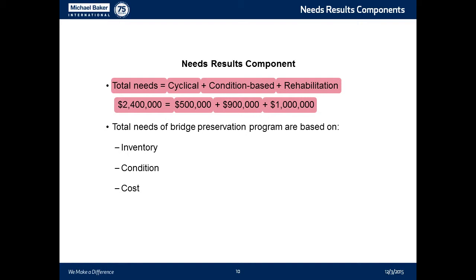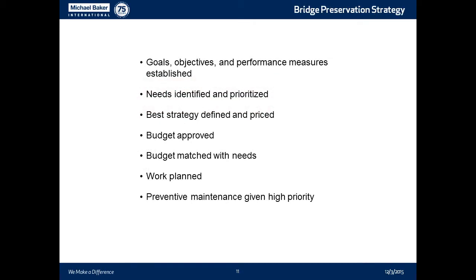In terms of strategy, Bill described the goals, objectives, and performance measures. Now is the time to work on identifying and prioritizing those needs, and that's going to be based on different risk criteria — scour is one. BRM is going to include a set of risk factors that states can use out of the box, and you can add your own. Your best strategy is defining priorities, getting budget approved, matching your budget with the needs, and giving preventive maintenance a high priority.